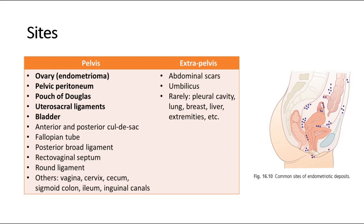Whereas for extra-pelvic areas, it can be found within the umbilicus or other places such as the pleural cavity, the lung, the breast, liver, and even the extremities.